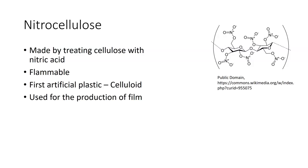Celluloid was often used for the production of film. The original films were quite problematic because they would often catch fire — they would melt. They estimate that a lot of material that was made on celluloid film is now actually gone forever because the material degrades over time. It's fairly reactive. Then they found new methods by which they could produce plastics and made a much better material.